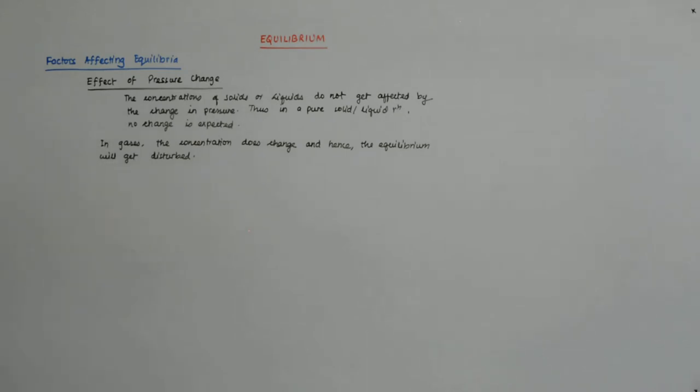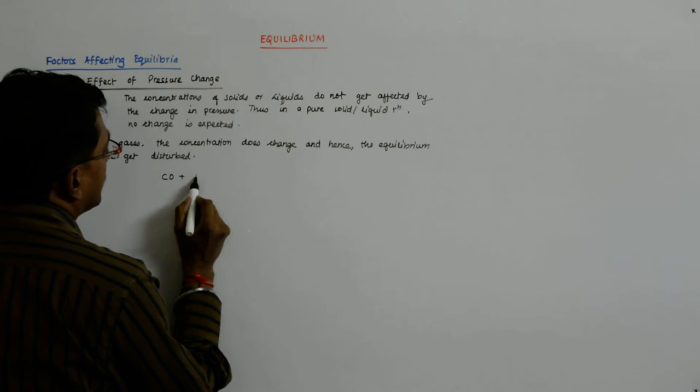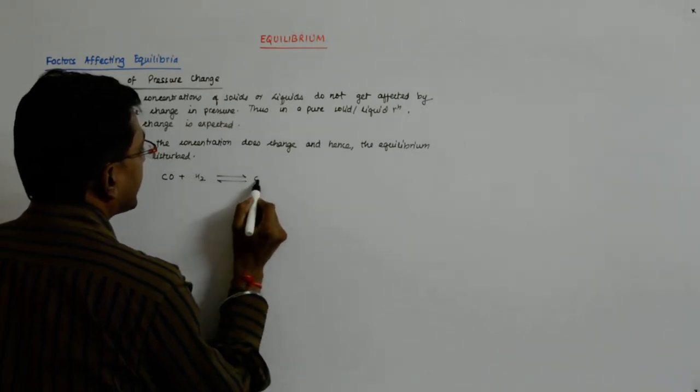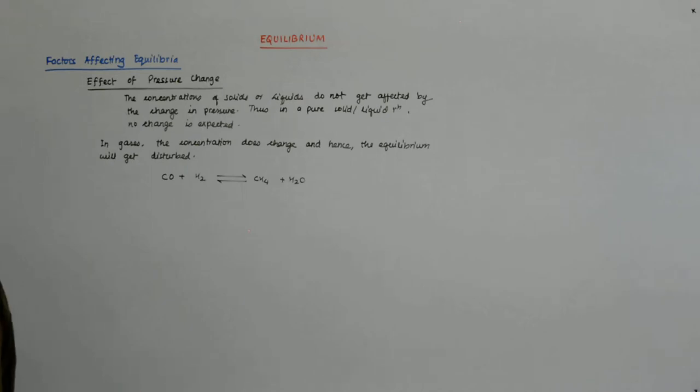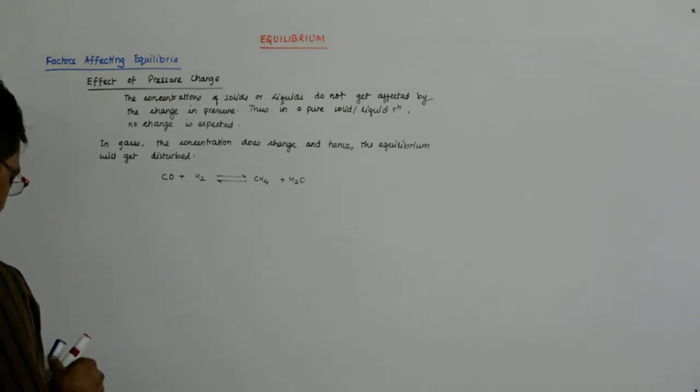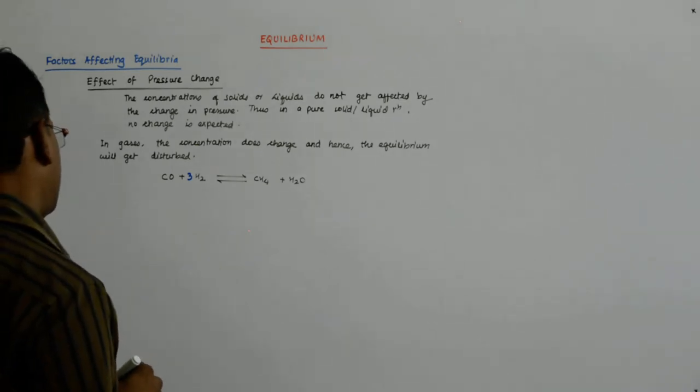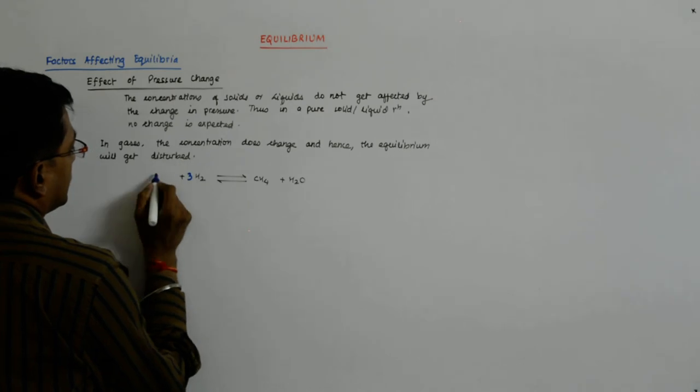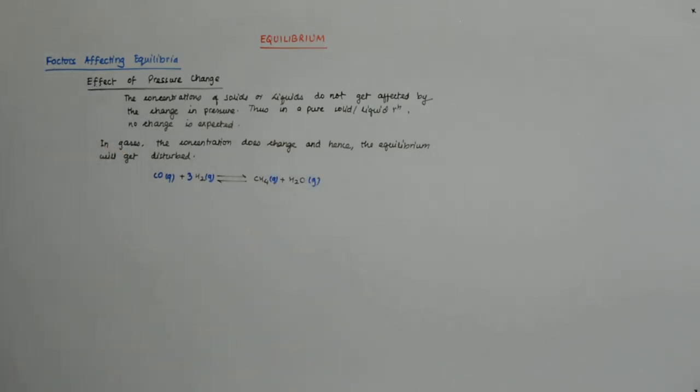So let's try to look at an example where carbon monoxide reacts with hydrogen gas to give us methane and H2O. Try to balance it. If I write 3 here, does it get balanced? They are all gases.